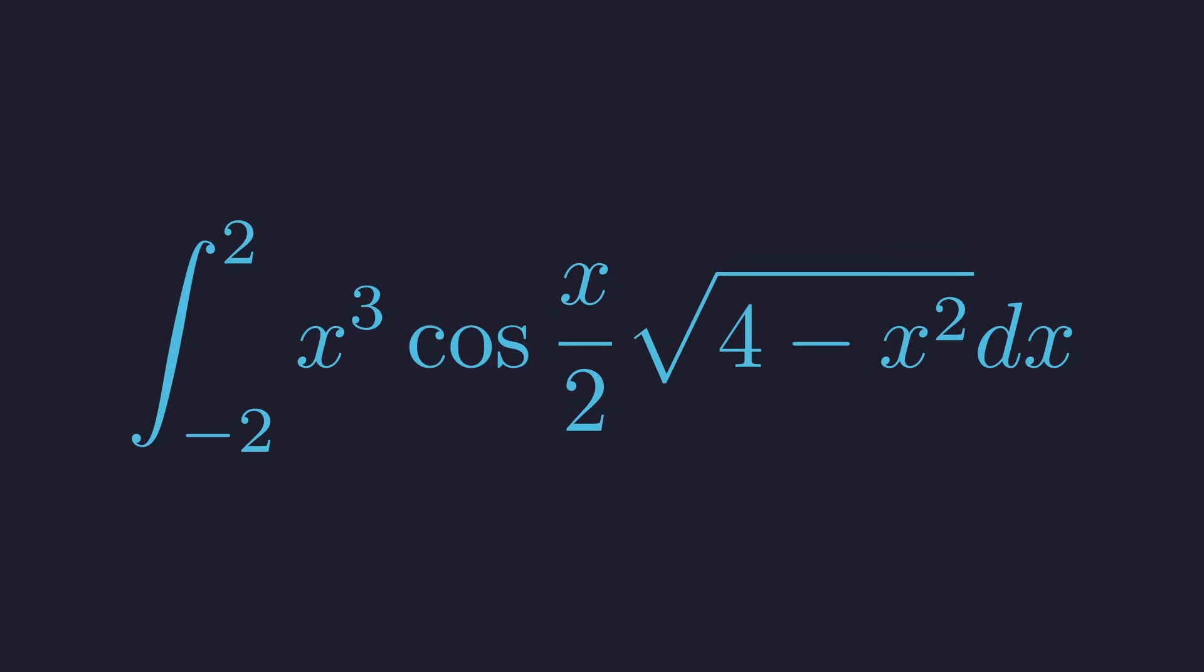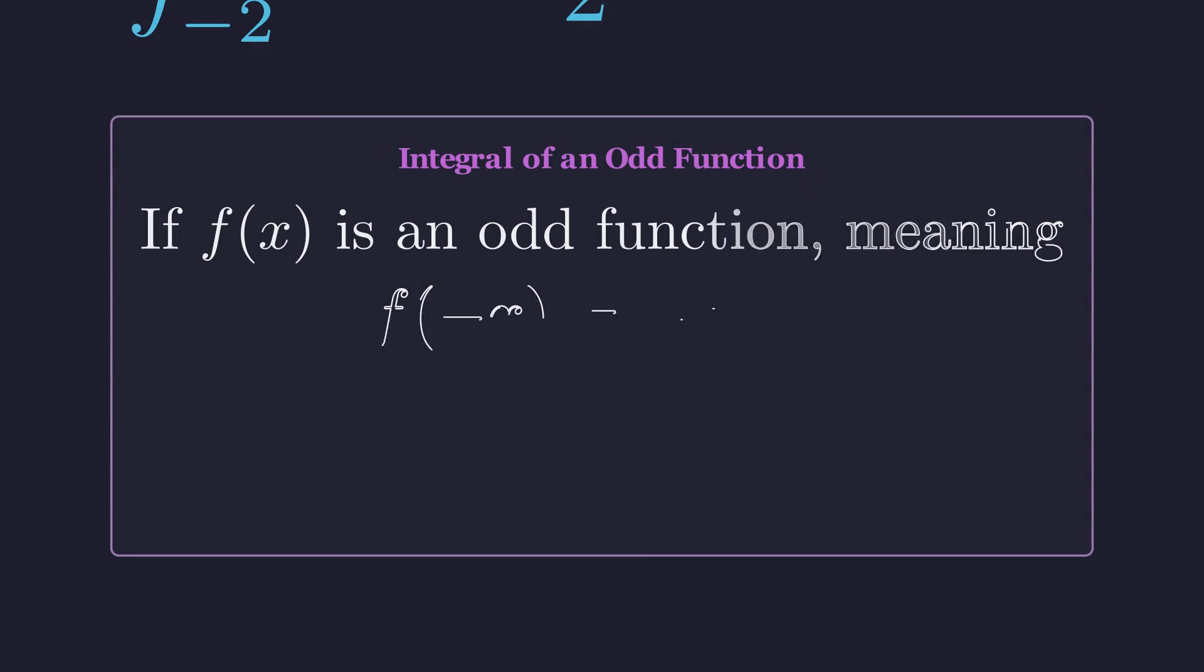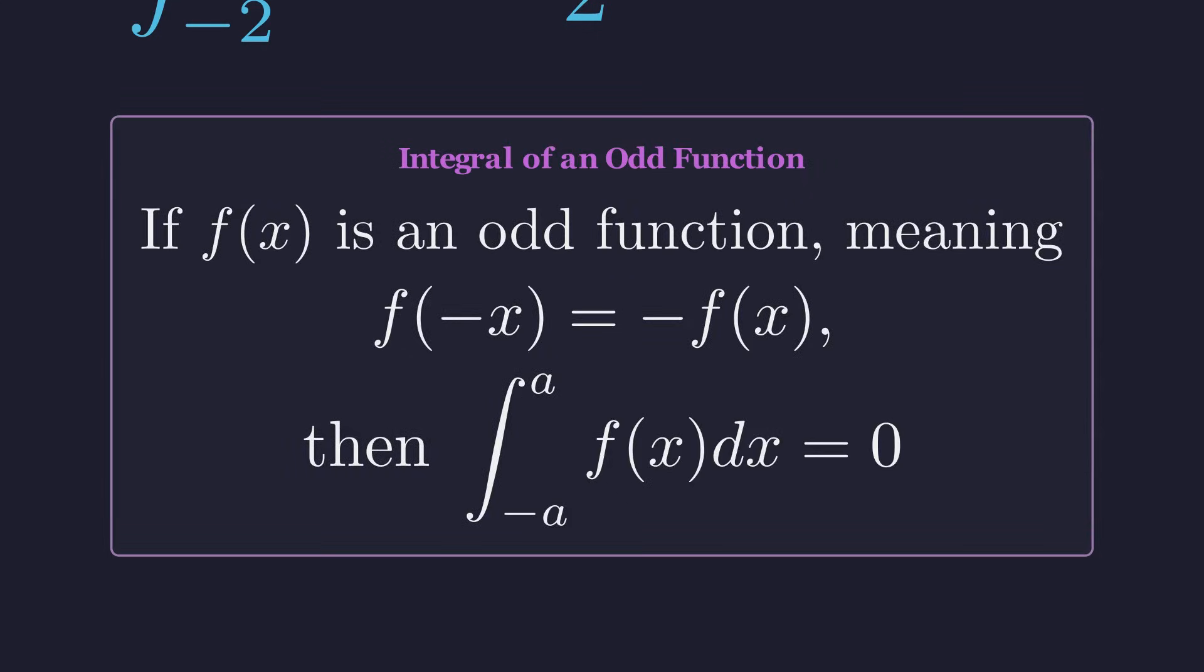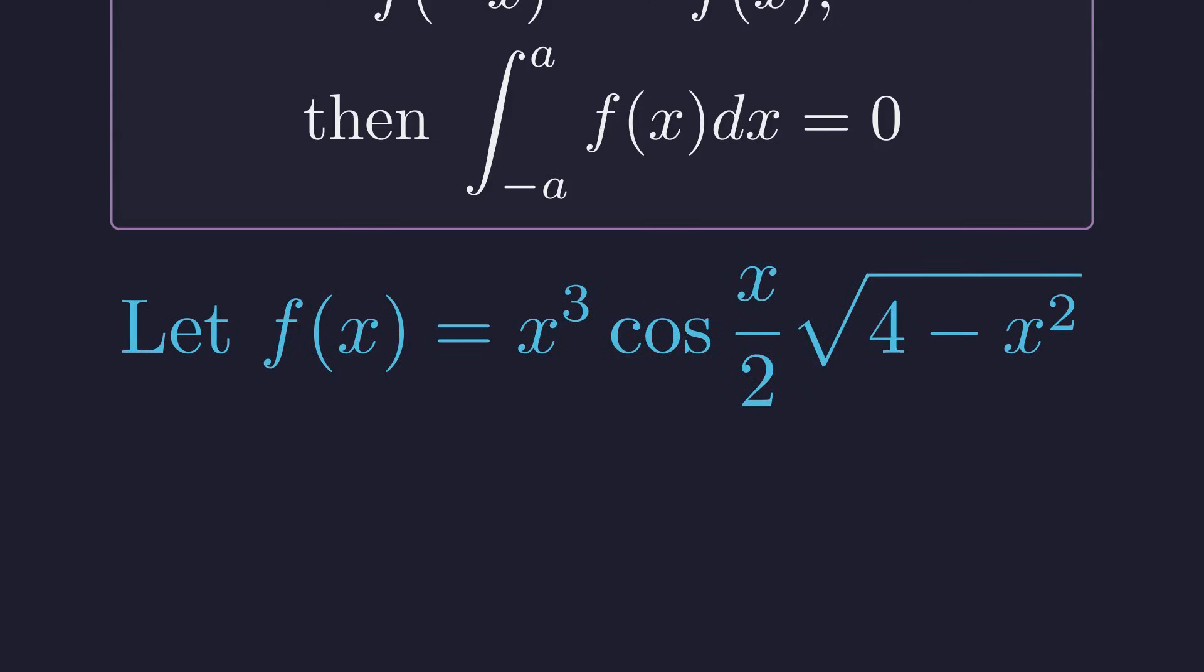Here's a fact worth remembering: when you integrate an odd function over a symmetric interval, the result is always zero. The positive area on one side exactly cancels the negative area on the other. Let's call this function f of x. To check if it's odd, we need to see what happens when we plug in negative x.